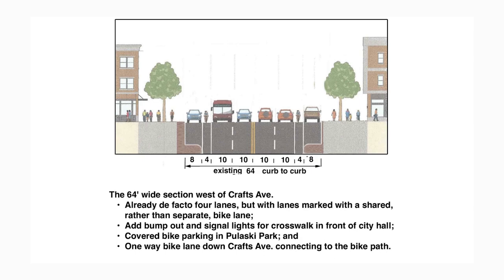We would add bump outs at the crosswalk in front of City Hall, signal lights, and potentially raise that crosswalk to be a speed hump. There will be covered bicycle parking in Pulaski Park near the bus stop, since Pulaski Park is already accessible from the bike trail through the rear of the park. And then there will be a one-way bike lane down Crafts Avenue that would connect to the bike path, creating a well-connected bicycle network.